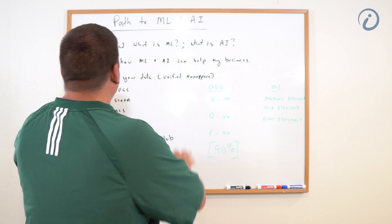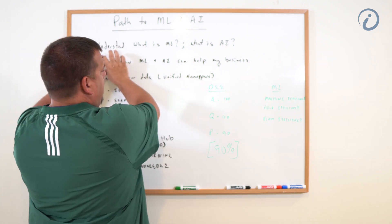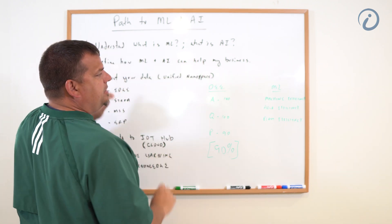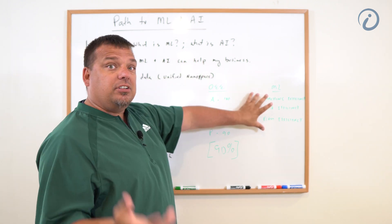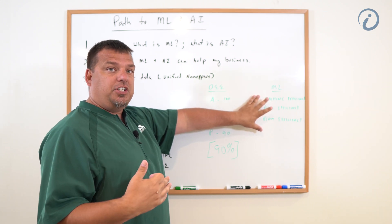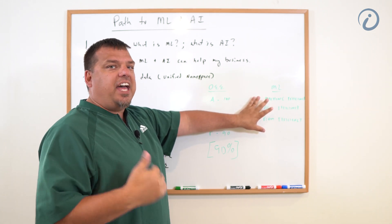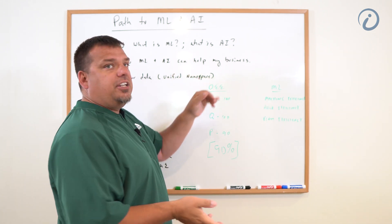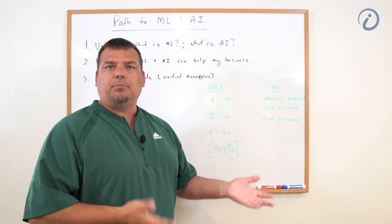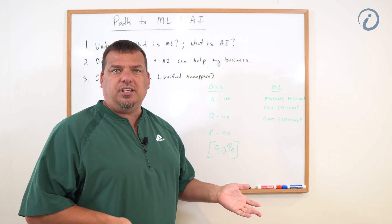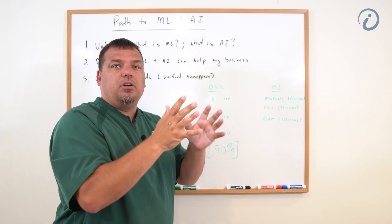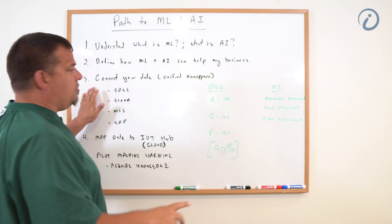So what we're going to say is that machine learning and AI can help our business by accurately determining what our plant efficiency is. And then AI is going to make recommendations on how we can improve that efficiency — here is the decision that gets that efficiency number up.